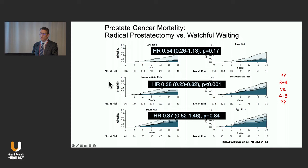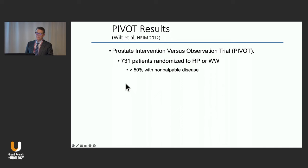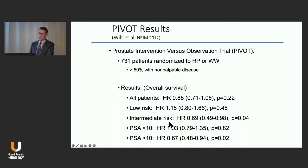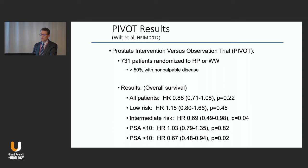The PIVOT trial — 731 patients randomized to radical prostatectomy versus watchful waiting, 50% with non-palpable disease. For intermediate risk patients, the hazard ratio for survival was 0.69. The overall study curve, which included a large group of low-risk or grade group 1 patients, was what was selectively shown. But looking at intermediate risk patients specifically, there is a survival advantage to intervention versus observation. For the PSA over 10 cohort, the hazard ratio was 0.67.